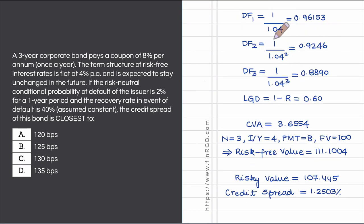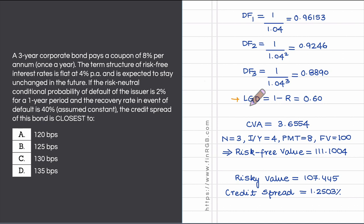The only remaining inputs are the discount factors. Using the 4% per annum annually compounded interest rate, compute DF1, DF2, and DF3. Loss given default is 1 minus the recovery rate; since the recovery rate is 0.4, LGD = 0.6. Note that the recovery rate here is measured as a percentage of the prevailing exposure of the instrument, consistent with the formulas used in the curriculum.